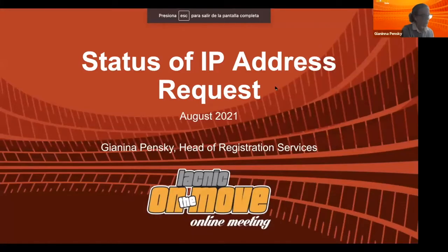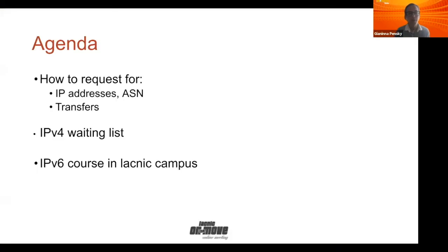I'm going to talk now about the status of IP address requests. We're going to see how to request for IP addresses — IPv4, IPv6, also ASNs, also how to request for transfers. We will explain something about the IPv4 waiting list. And we will share some information about available courses in our campus.